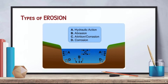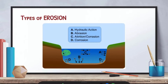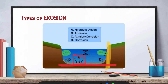Looking at a diagram, A stands for hydraulic action, which occurs along the river banks — those are the sides. B is abrasion, which occurs along the river bed — the bottom is always the bed, the sides are the banks, remember that. C is attrition, which occurs anywhere in the river; these sediments hit into each other, so they don't make contact with the river bank or river bed.